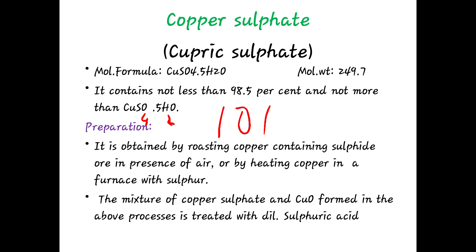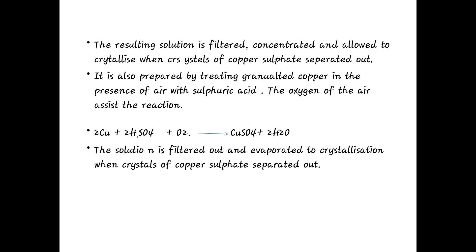Copper sulfate is prepared by roasting copper-containing sulfide ores in the presence of air, or by heating copper in a furnace with sulfur. The mixture of copper sulfate and copper oxide formed is then treated with dilute sulfuric acid. The resulting solution is filtered, concentrated, and allowed to crystallize, and the crystals of copper sulfate are separated out.